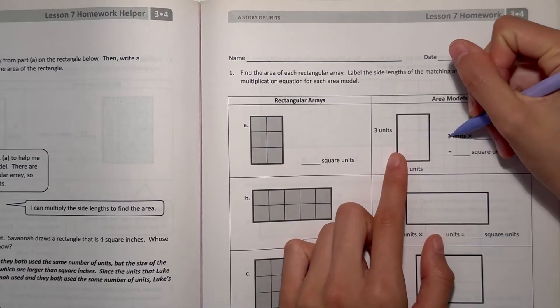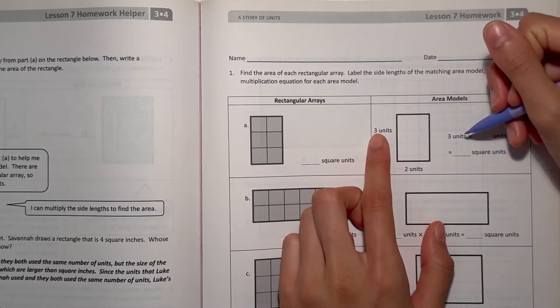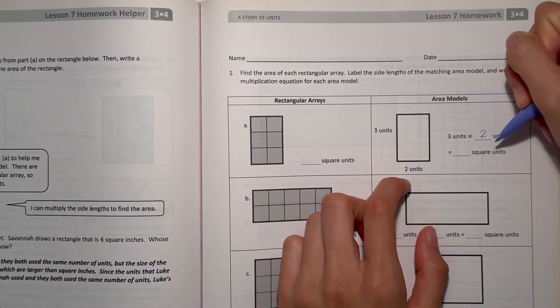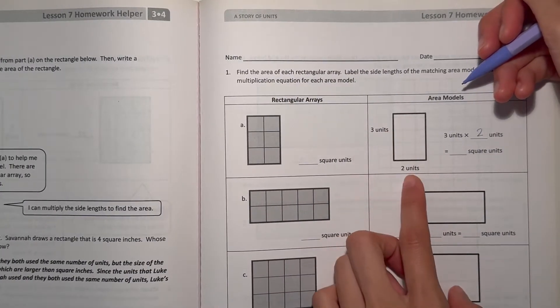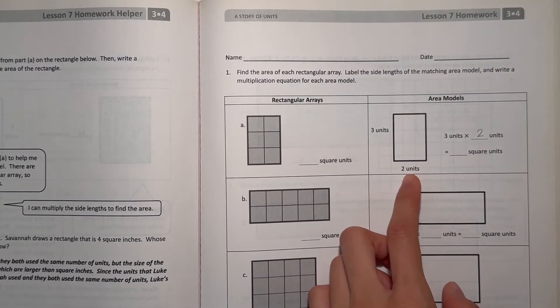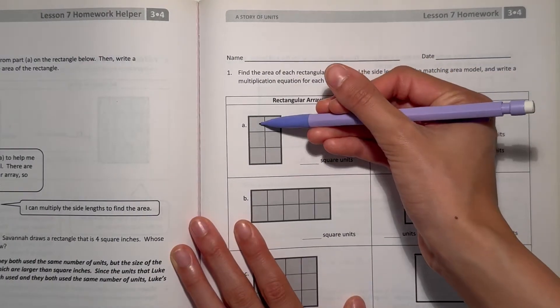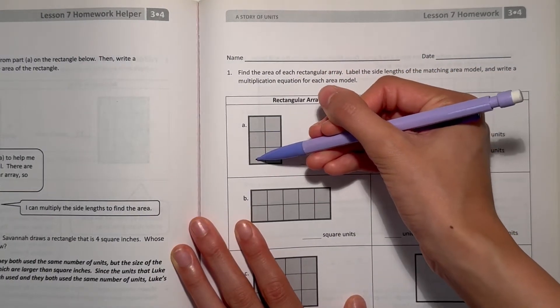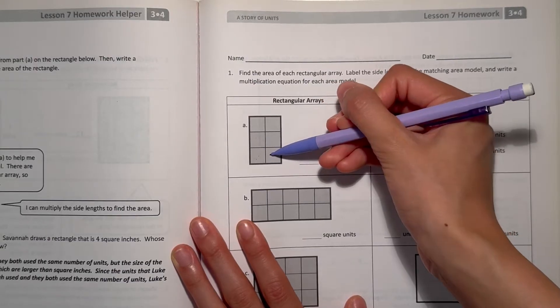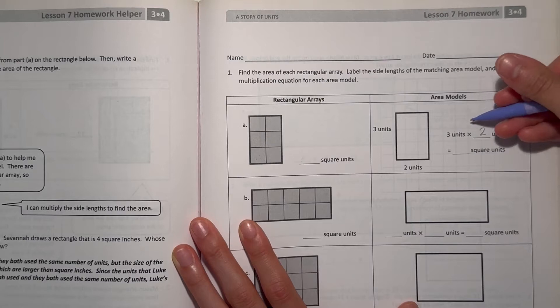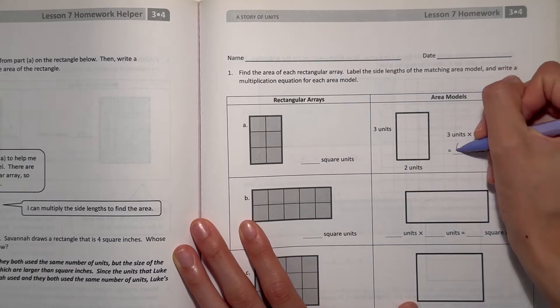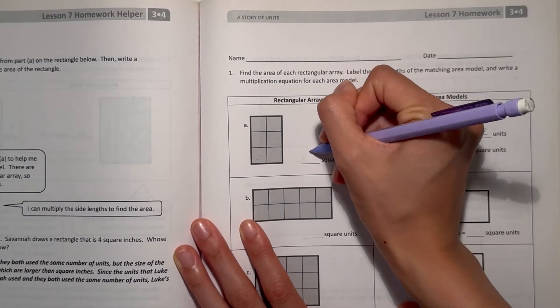Here, we have it labeled out. We have 3 units times 2 units because we're trying to find the area. And area is the length times the width. In this case, our length is 3, 1, 2, 3. And our width is 2, 1, 2. So 3 units times 2 units. 3 times 2 is 6. So our area is 6 square units.